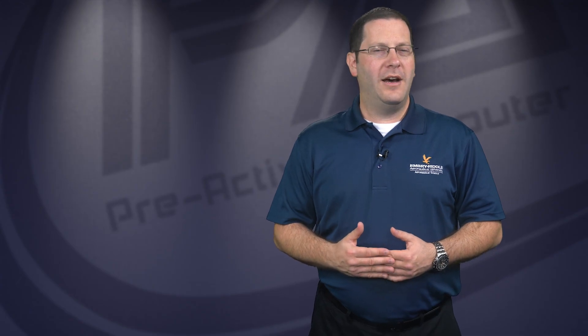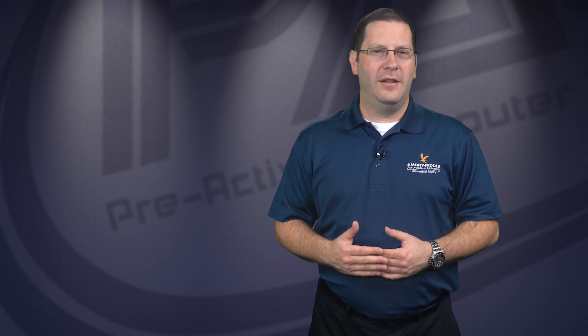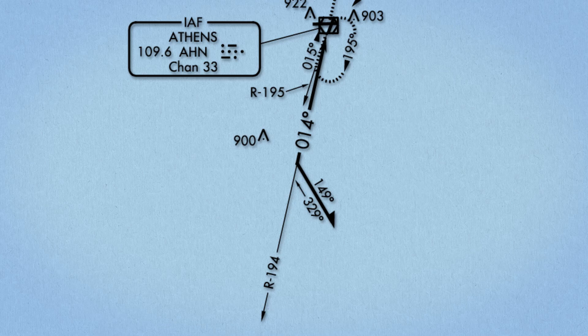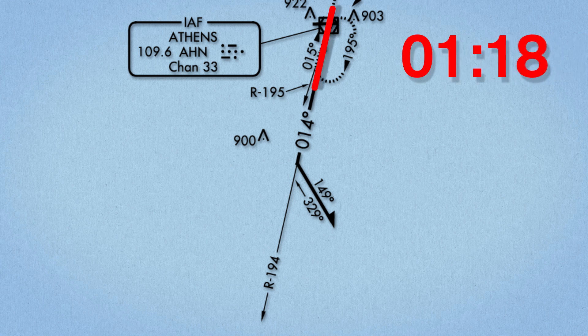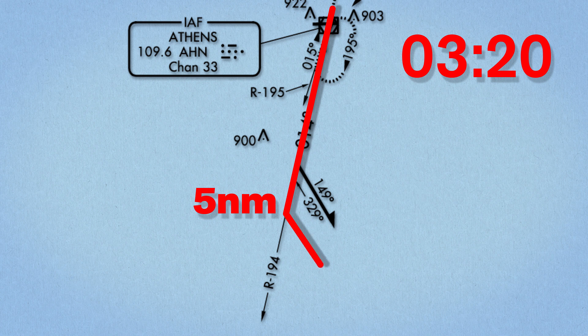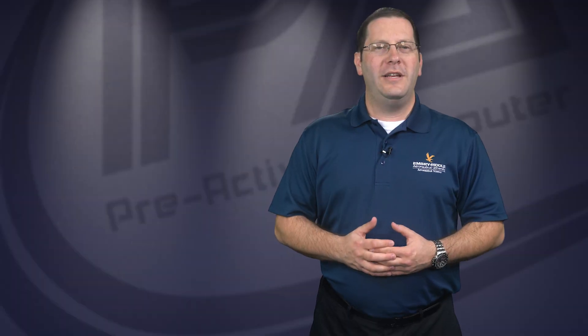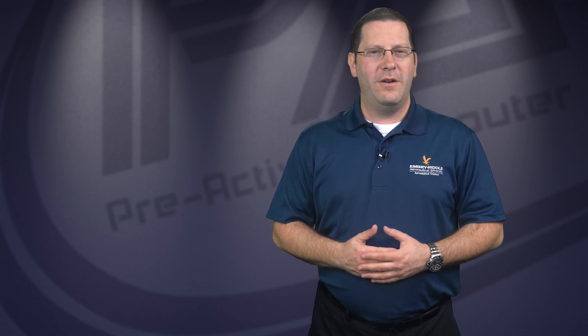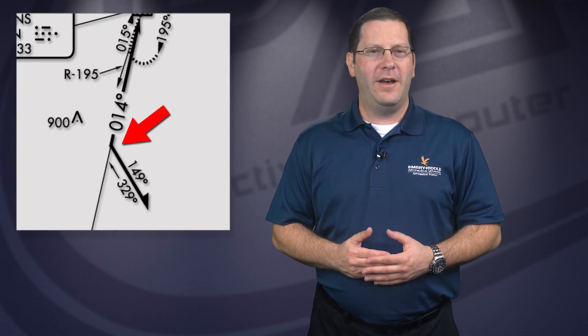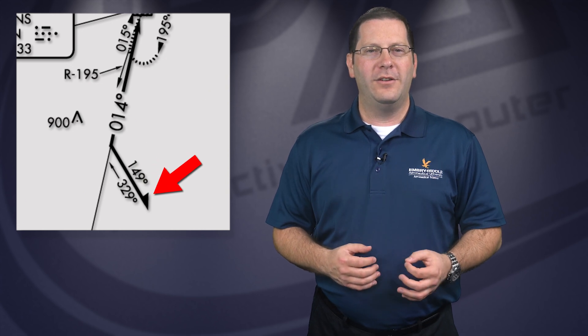In cases where DME is unavailable, you need to calculate a time duration to fly outbound. This time outbound should be calculated based on your ground speed so that it will result in the desired distance. Start a timer when passing over the VOR outbound, and then start the procedure turn once your timer has reached the calculated time. The procedure turn is depicted on the plan view of the VOR approach, indicated by a 45-degree offset from the radial outbound, and an arrowhead in the initial direction of the turn.